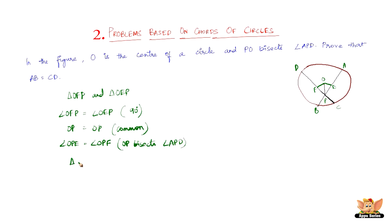As a result, triangle OEP is congruent to triangle OFP. Therefore OE equals OF, because corresponding parts of congruent triangles are equal. Since OE equals OF, it indicates that chords AB and CD are equidistant from center O, and therefore they are equal. This ends the problem.